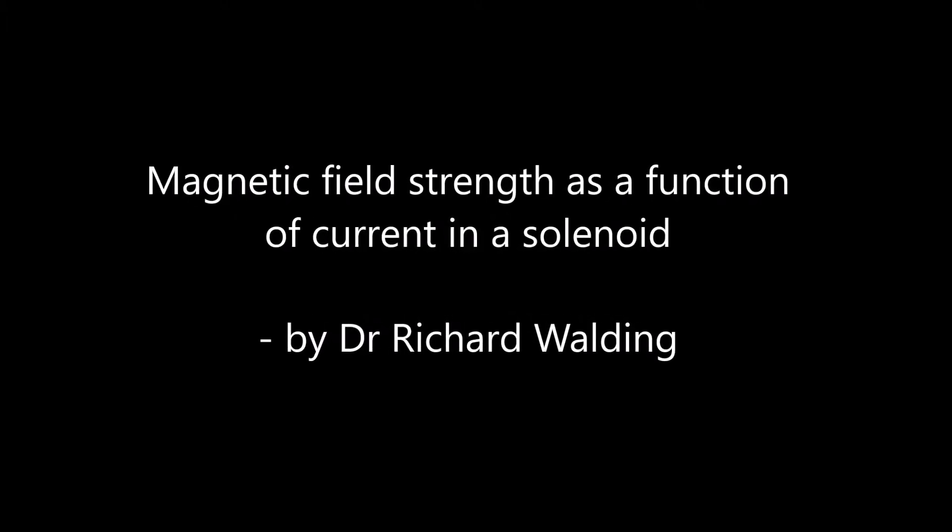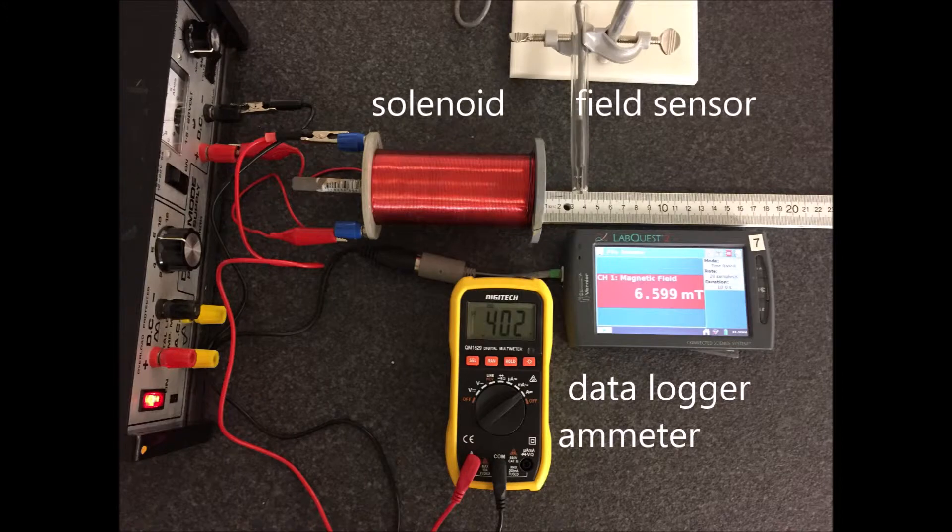In this video I'm going to have a look at how magnetic field strength varies as a function of current through a solenoid.